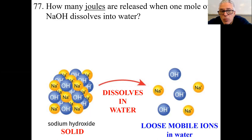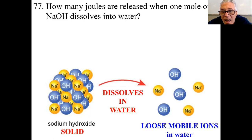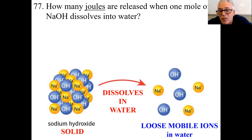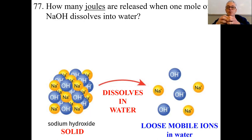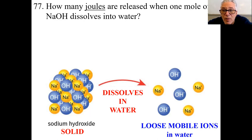This question says: how many joules are released when one mole of sodium hydroxide dissolves in water? Sodium hydroxide is an ionic solid — it's a white crystal that looks like salt but tastes like death. Put it in your mouth and it dissolves in saliva, creating sodium hydroxide aqueous, which is a base — the opposite of acid. It would dissolve your tongue. What happens is the sodium hydroxide crystal goes into water, busts open, and you end up with positive and negative ions floating around. This is called solvation, S-O-L-V-A-T-I-O-N, or sometimes ionization when an ionic compound busts open into loose mobile ions.